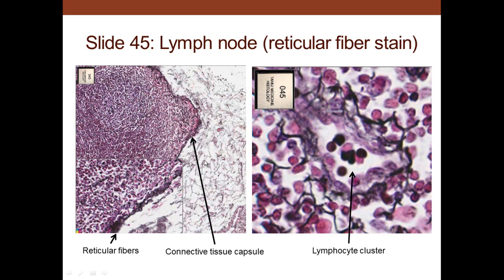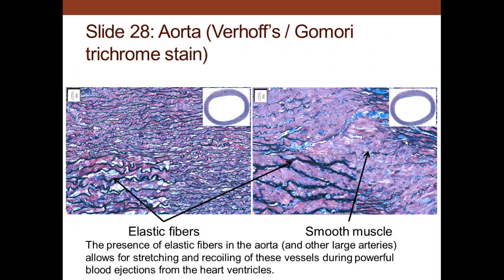A lymph node has reticular fibers, which are type 3 collagen fibers that branch. These reticular fibers allow lymphocytes to percolate through the lymph node—like golf balls falling through a grapevine. Another type is elastic fibers; here we see nicely coiled elastic fibers in a blood vessel.